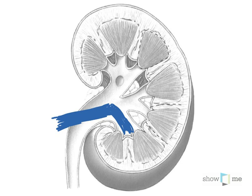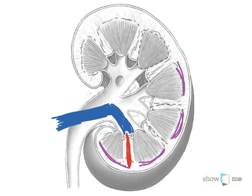Coming off the renal vein, as we pass between the individual renal lobes, we become the interlobar veins. Using purple, we have the arcuate veins, which sit in close proximity to the arcuate arteries, allowing filtered blood to exit the kidney. Finally, in green, we have the cortical radiate veins, which associate with the glomerular capsule.